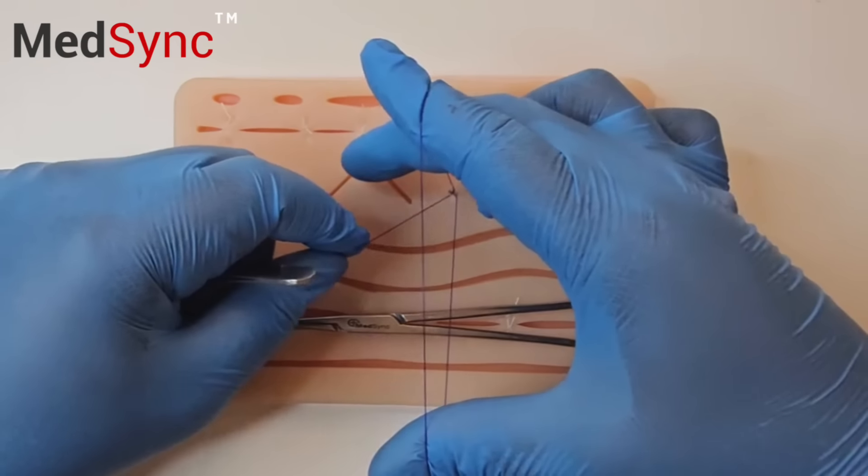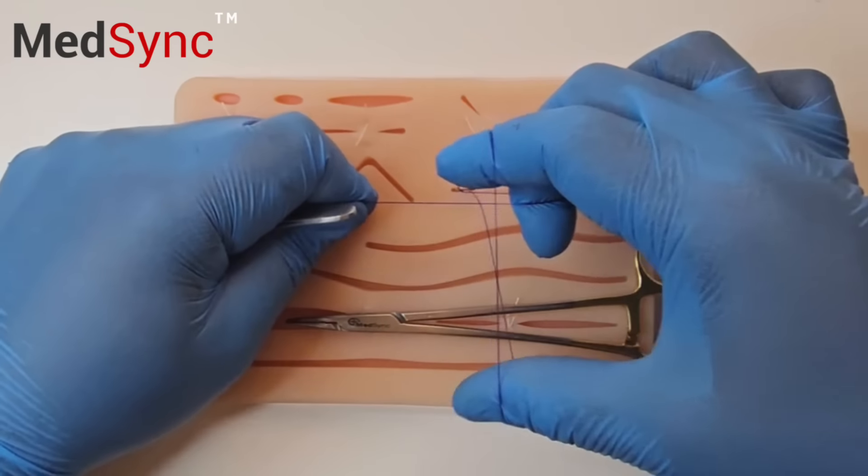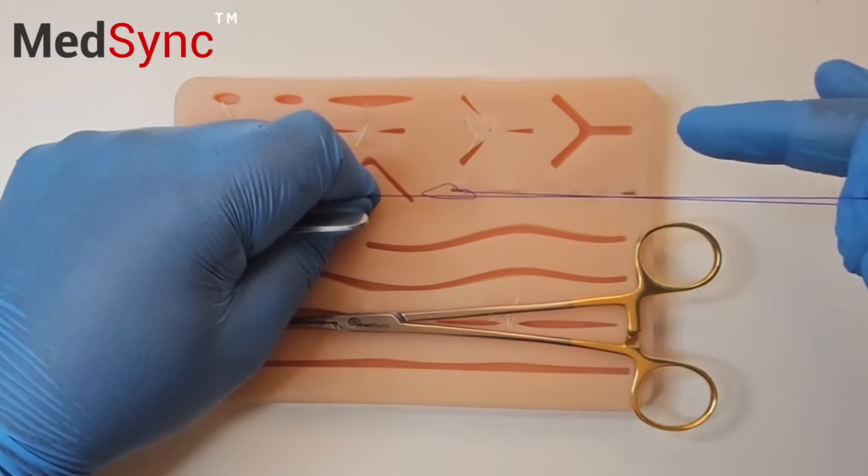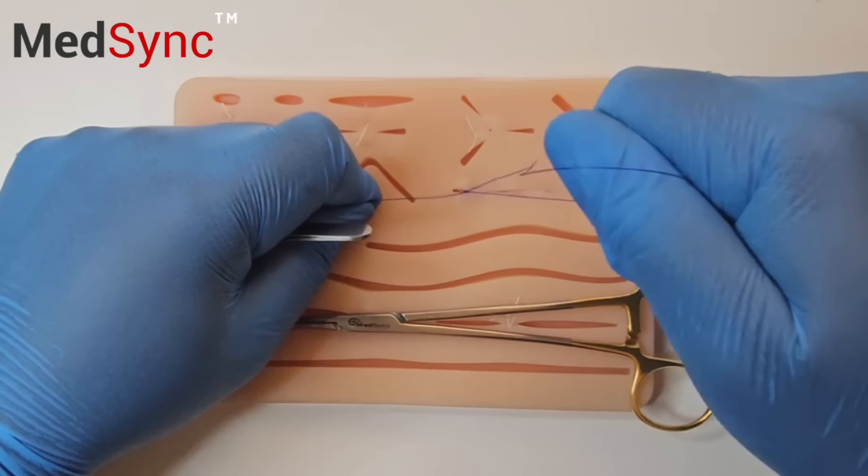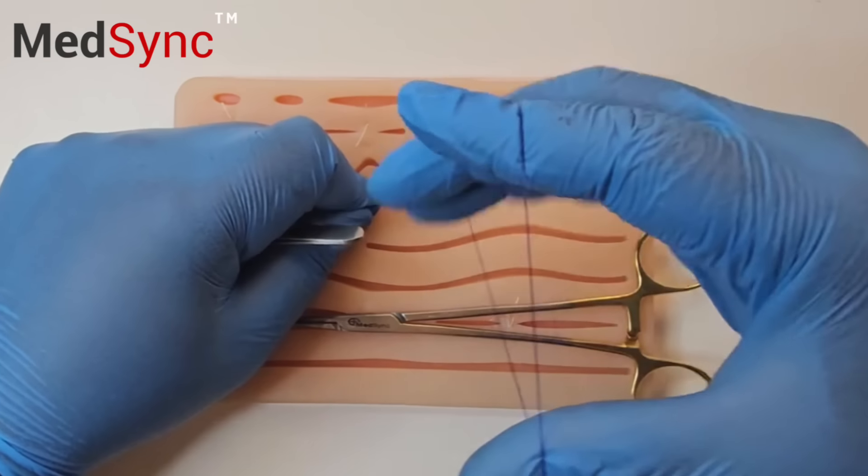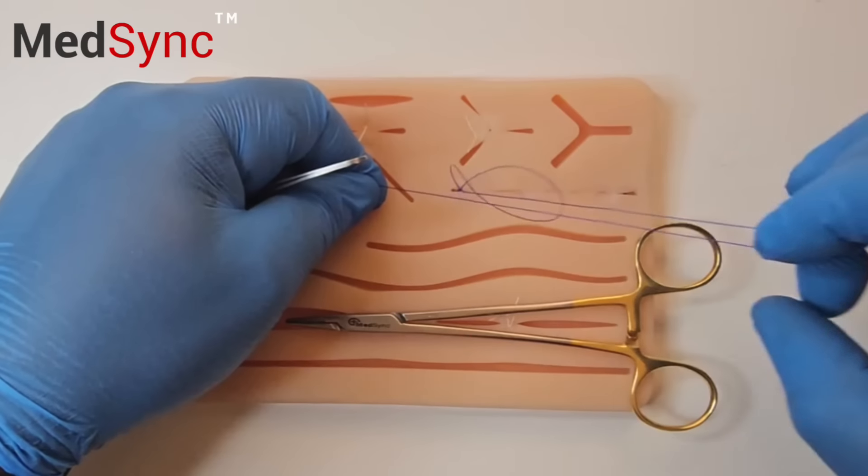Recreate the loop. Bring the long suture through the loop. Pull the lower suture until the knot slides down. Repeat this step four to six times.